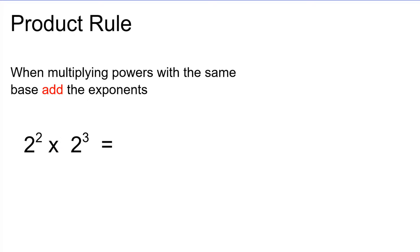So we're multiplying powers, as you can see with the multiplication sign, so we're going to add our exponents together. Our base is going to remain 2, and we're going to add our exponents: 2 plus 3. So we're going to get 2 to the power of 5.